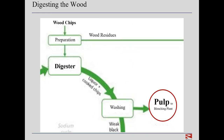Wood chips are cooked for perhaps two hours in pressurized digester vessels at about 350 degrees Fahrenheit. Once the wood chips are separated from the lignin and the cellulose, the brown fiber is washed and sent to a bleaching plant. That is the goal of this part of the paper mill — simply creating the pulp. Some mills exist just to supply pulp to the open market; others use the internally generated pulp to make cardboard, tissue, or other types of finished paper.